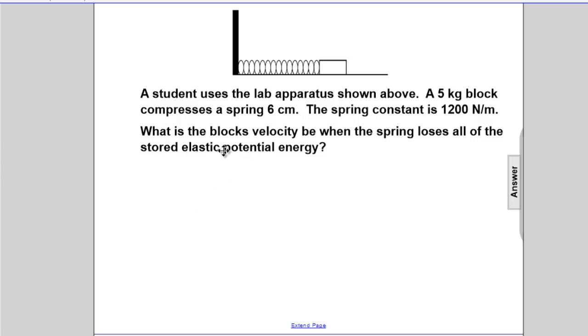So we'll start off with EPE, and then work's going to be done on this block. It will gain KE. So our starting energy is EPE, and our ending energy is KE. The spring starts off with EPE, and the block will end up with KE. You'll lose one form and go to the other.